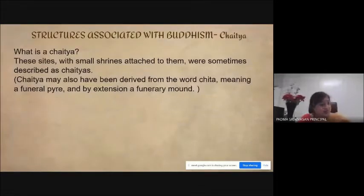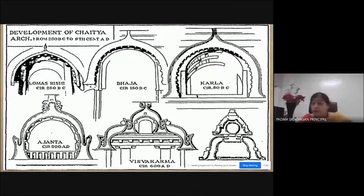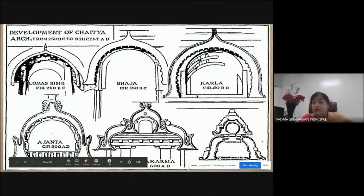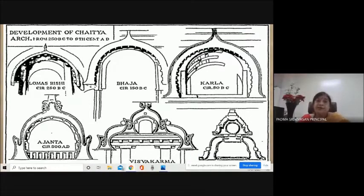Let's see some of these chethyas. The first one is the Lomas Rishi chethya, which is one of the oldest ones. Then there are the Karle one and the Ajanta one, which is world famous. The next ones are found near Bhuvaneshwar — a whole series of them associated with Ashoka and his inscriptions.